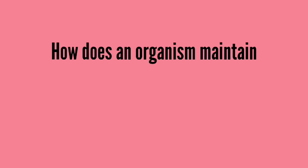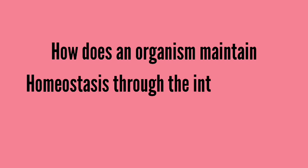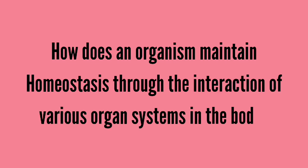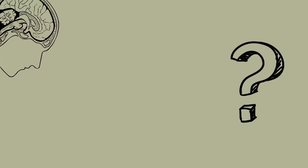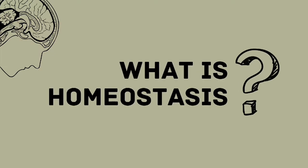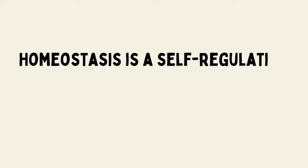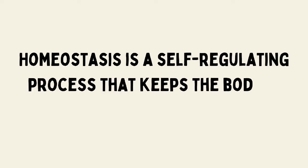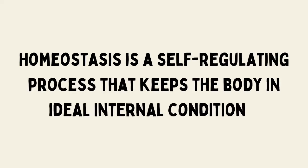How does an organism maintain homeostasis through the interaction of various systems in the body? But first, let us know what homeostasis is. Homeostasis is a self-regulating process that keeps the body in ideal internal conditions.